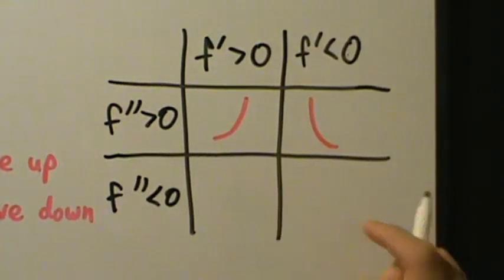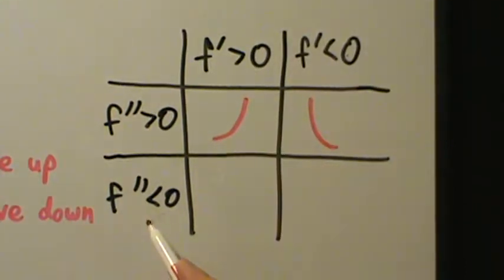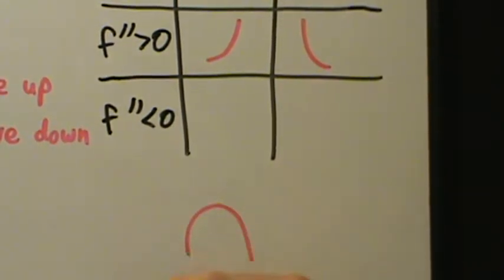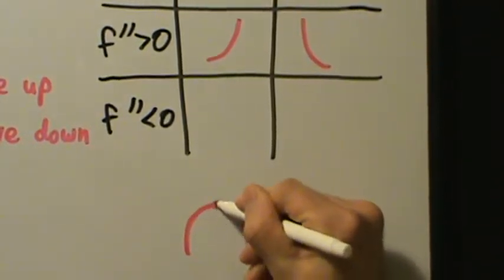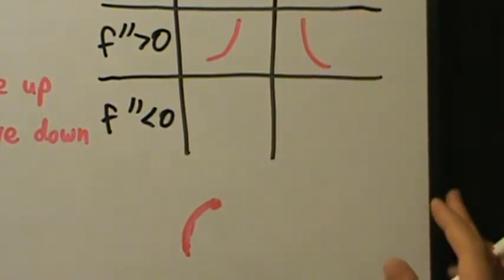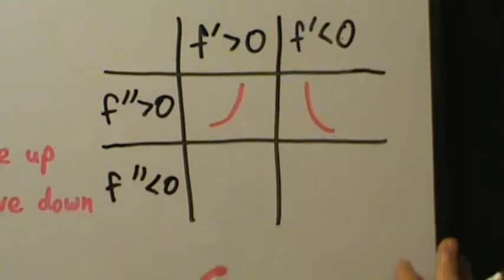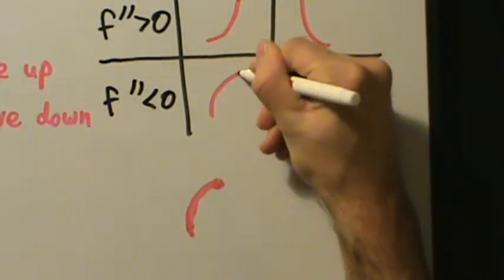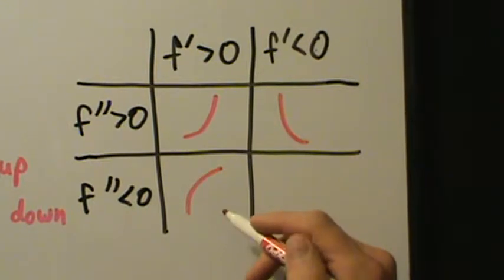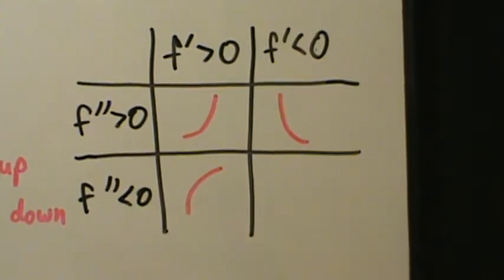If f prime is positive and f double prime is negative, the function is increasing and concave down. Concave down looks something like an upside down bowl. We want the increasing part of that shape, which goes from the left side up toward the top. So increasing and concave down looks like that piece — the y values get larger as we move to the right, and it's part of that upside down bowl.